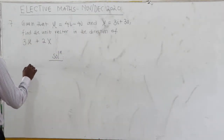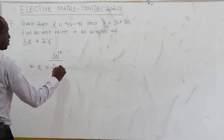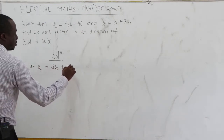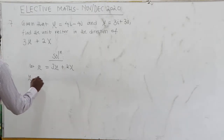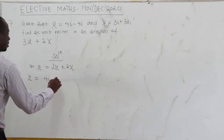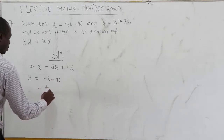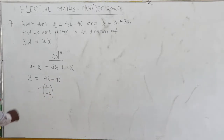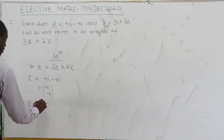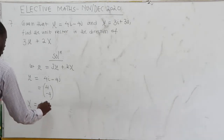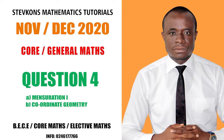Let vector a equal to 3u plus 2v. We are given u to be 4i minus 4j, which is the same as (4, -4). Our vector v is 3i plus 3j, which is the same as (3, 3).